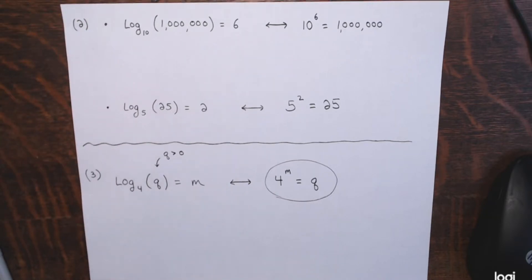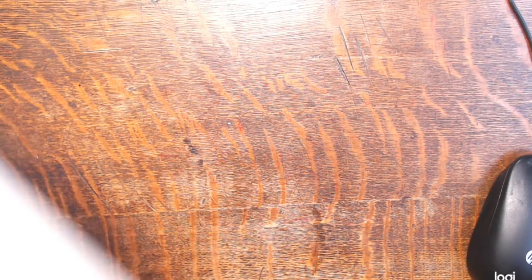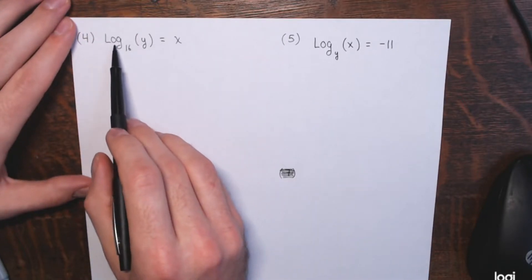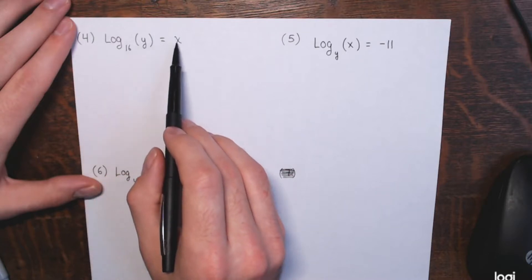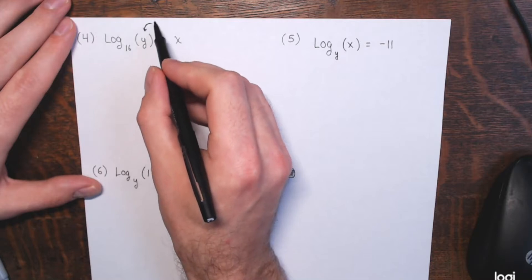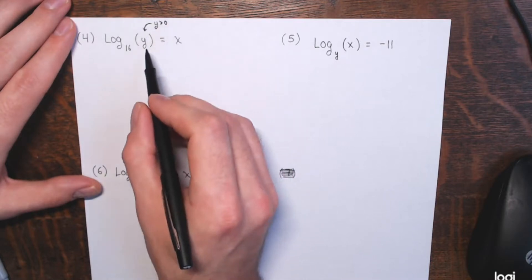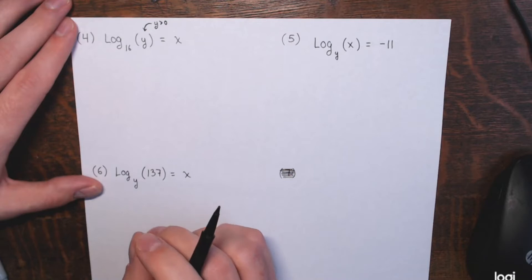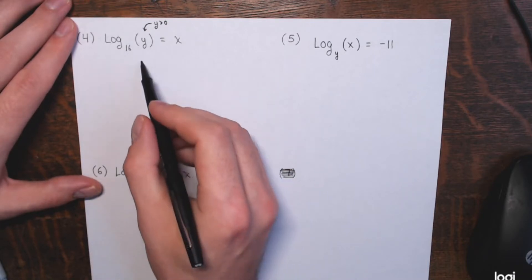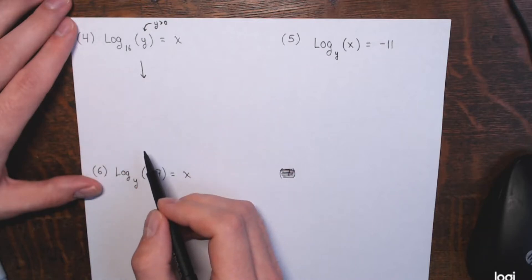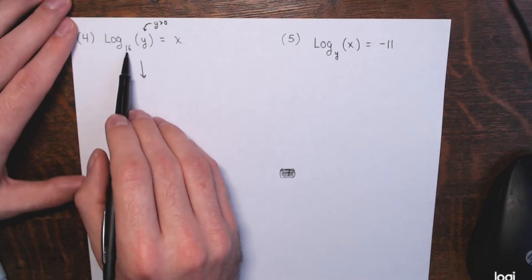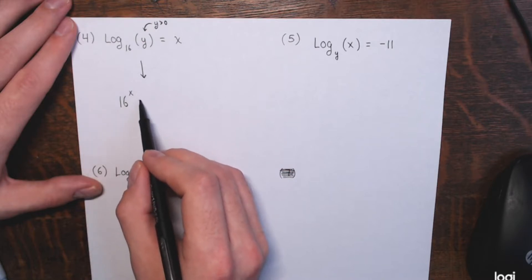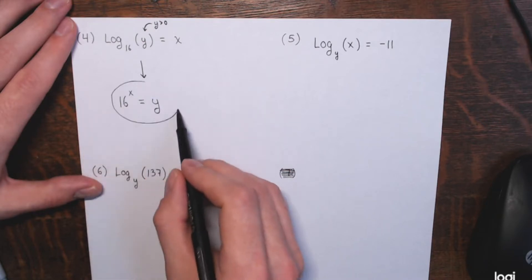Here we have a logarithmic statement: the log base 16 of y equals x. I'll point out that y here has to be positive — the input of a logarithm has to be positive, and that's going to be very important later. If I want to change this to the equivalent exponential form, this is the same thing as saying 16 to the x power equals y.